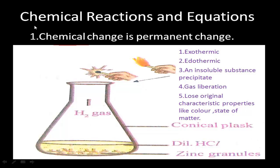The first property of a chemical reaction is that chemical change is a permanent change. It means the reactants do not come back to their original position after the reaction is completed. You can observe this in the picture shown, where one conical flask is there.